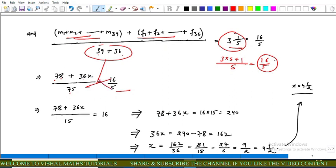After cross multiplication we get 78 plus 36x equals 16 into 15 which equals 240. This implies that 36x equals 240 minus 78 which equals 162.